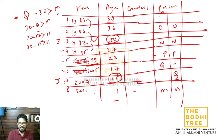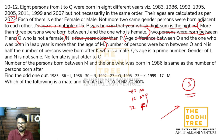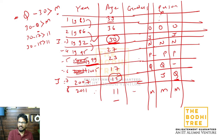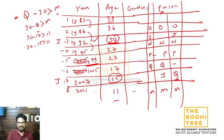Is case mein J yahan par nahi ho sakta toh J yahan par aayega. Ek aur possibility banate hain. Straightforward hai - O yahan par, J yahan par, N yahan par, P yahan par. Number of persons born between O and N - dono ke beech mein ek hi hai. That is half the number of persons born after K who is the male. After K 2 log chahiye.